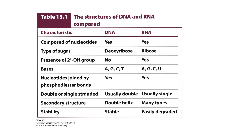To sum up the structure of RNA, there is a table which summarizes all similarities and differences between DNA and RNA. Keep in mind the similarities: both are composed of nucleotides, and in both, nucleotides are joined by phosphodiester bonds. Differences include: type of sugar, presence of a hydroxyl group on the 2' carbon, strandedness, secondary structure, and stability.